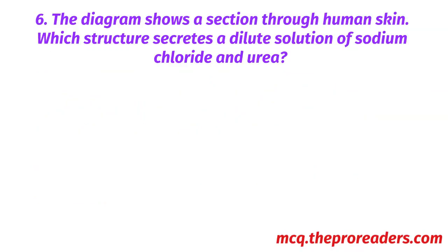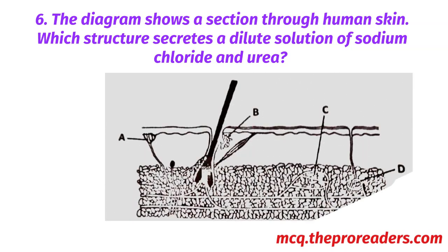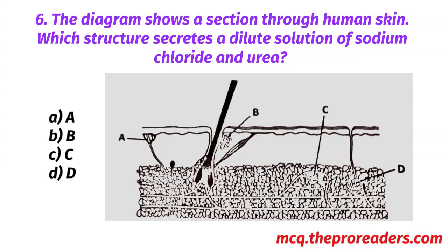The diagram shows a section through human skin. Which structure secretes a dilute solution of sodium chloride and urea? Options A, B, C, D. Option D is the correct answer.